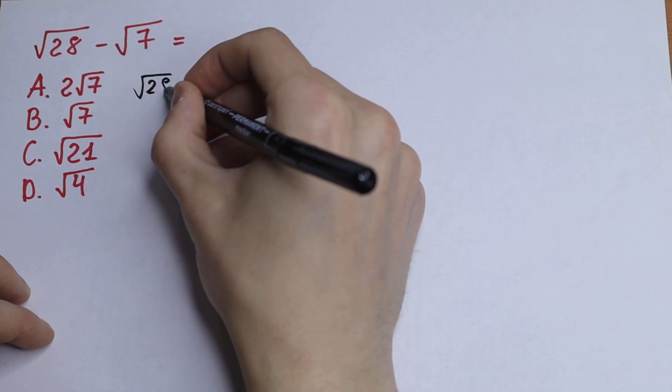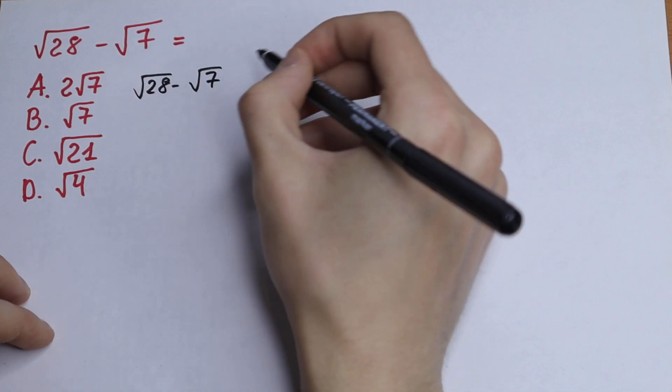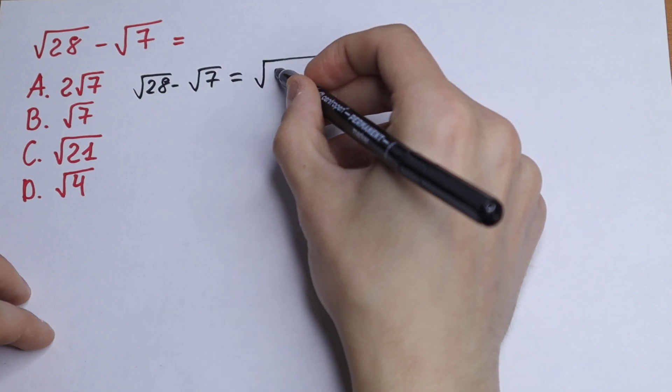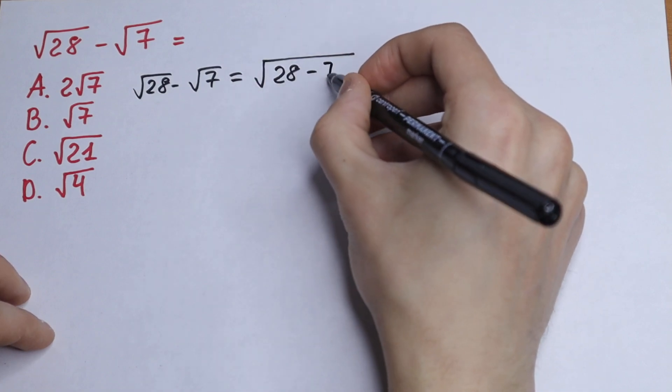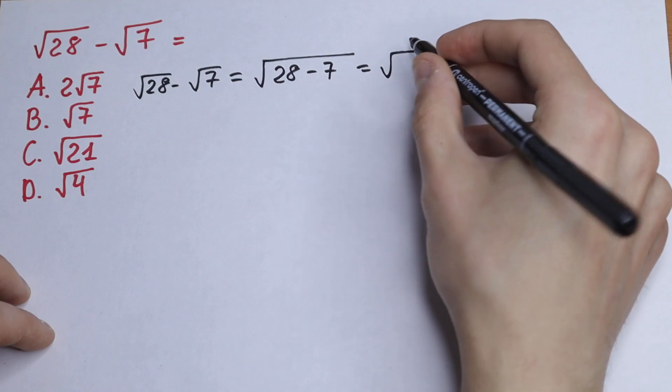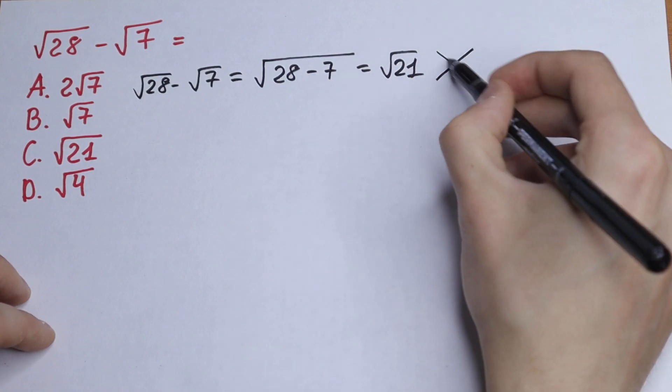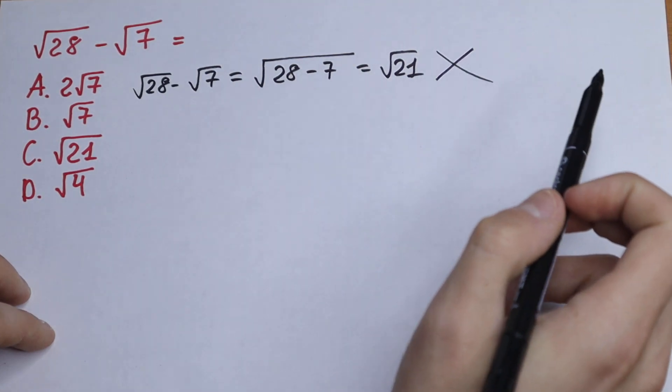We have square root of 28 minus square root of 7. And the most common mistake is that when we write it in one square root: 28 minus 7 equals square root of 21. This is a mistake. Forget this way to solve this.